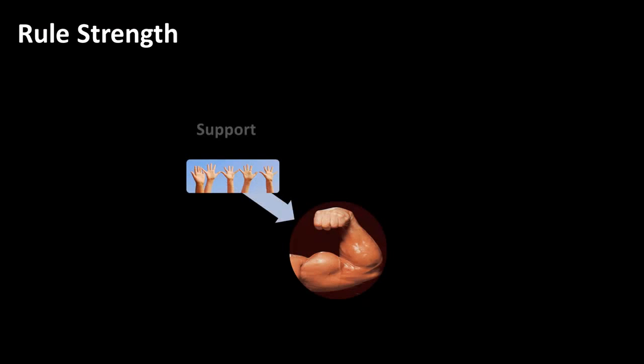Now we want to talk about the three different criteria we looked at: support for an item set, confidence in a rule, and the lift ratio for a rule. Those are the three things we have looked at.